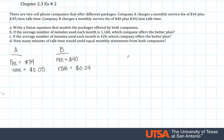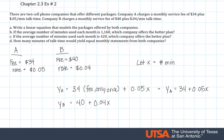Let's let x be the number of minutes used. So for YA, which is the cost, the total cost, we have a $34 fee, which is only once, and then plus per every minute it charges 5 cents. And similarly, for company B, we have a $40 fee, which is only one time, plus the 4 cents per minute. So this simplifies to YA being 34 plus 0.05x and then YB would be 40 plus 0.04x.